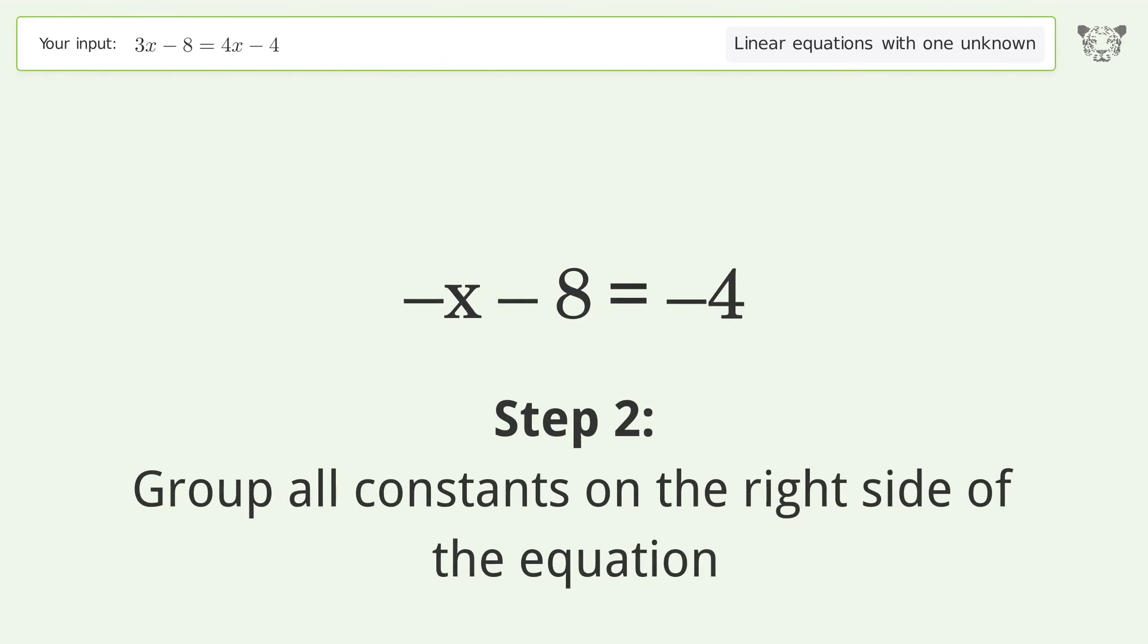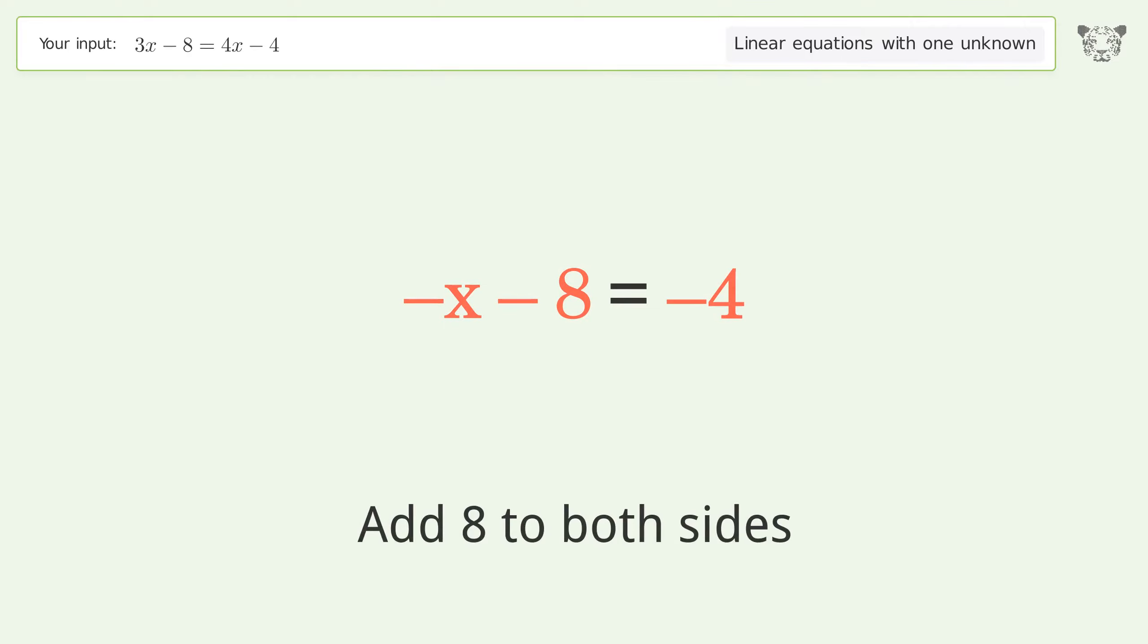Group all constants on the right side of the equation. Add 8 to both sides. Simplify the arithmetic.